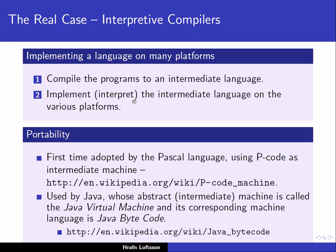By doing this, we make our programs portable. This was first adopted by the Pascal language, using an intermediate language called P-code. It is currently used by Java, whose abstract machine is called the Java virtual machine, and the corresponding machine language is Java bytecode.